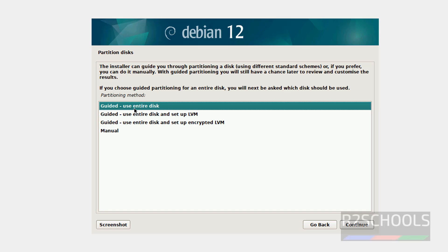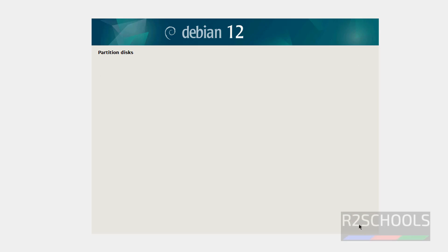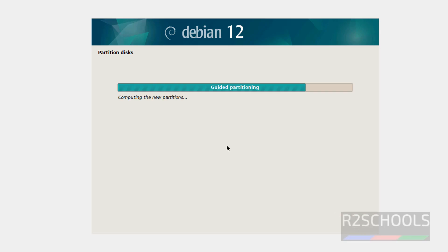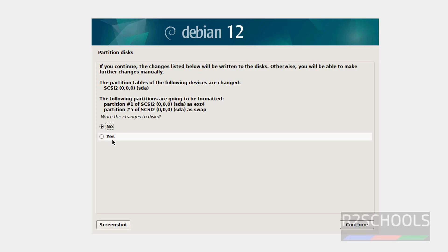For disk partitioning, select Guided — Use Entire Disk and click on Continue. Select the partition disk and continue. Then select Finish Partitioning and Write Changes to Disk, and click on Continue. Select Yes and click on Continue.